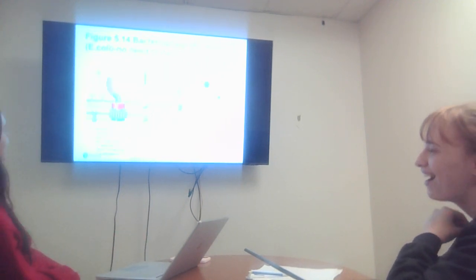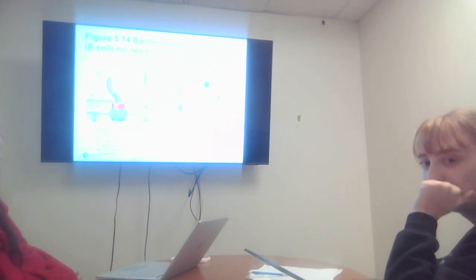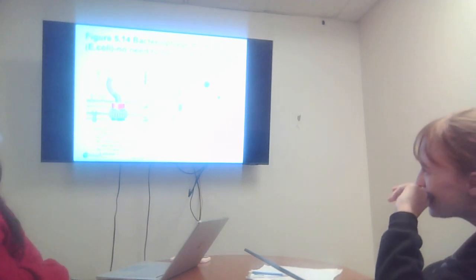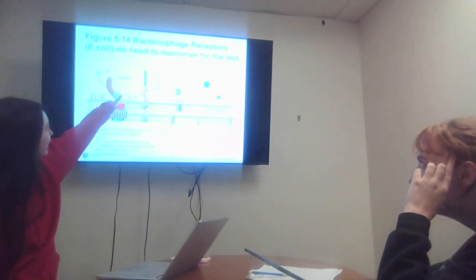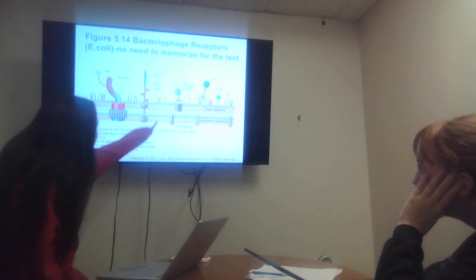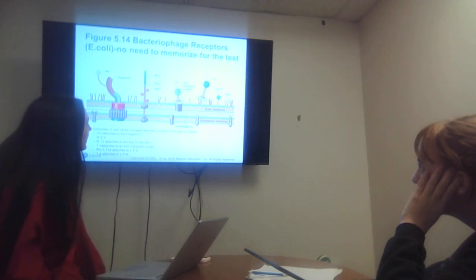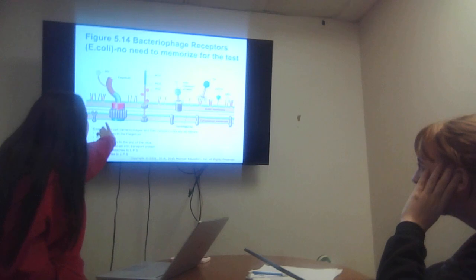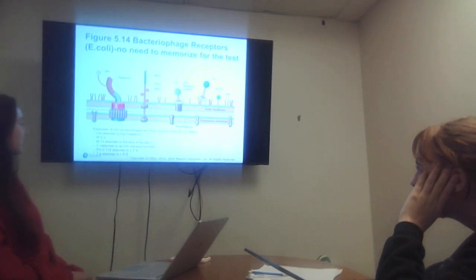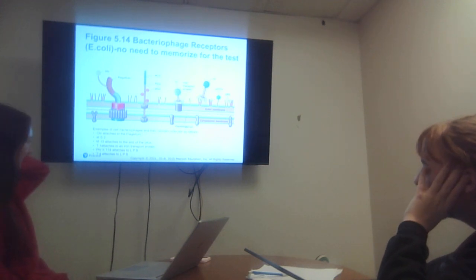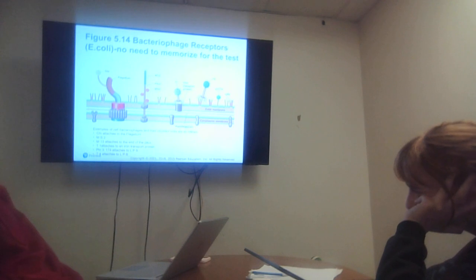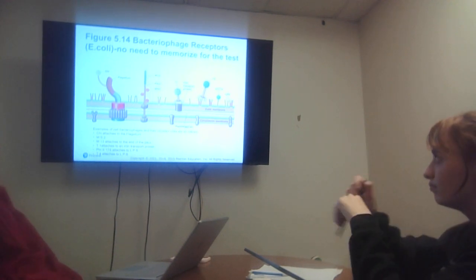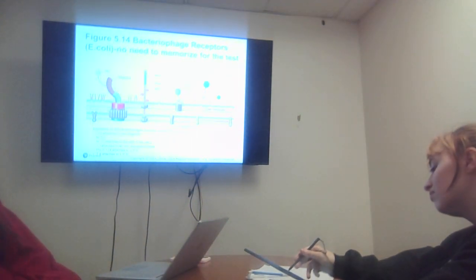This is a figure of the bacteriophage receptors on E. coli. No need to memorize for tests but we can still go over it anyway. This is the chi flagellum, M13 pilus, MS2, T1 iron transport protein, T4, the LPS, the outer membrane, the cytoplasmic membrane, and these are all peptoglycans. Examples of bacteriophages and their receptor sites: chi attaches to the flagellum, MS2 and M13 attach to the end of the pilus, T1 attaches to an iron transport protein, and VX174 and T4 attach to LPS.